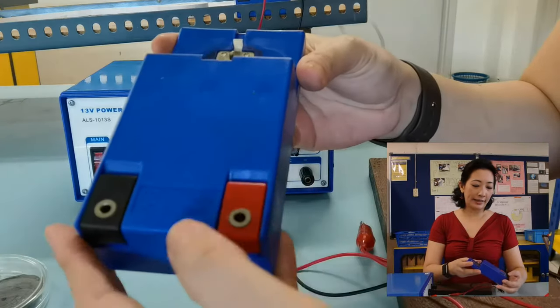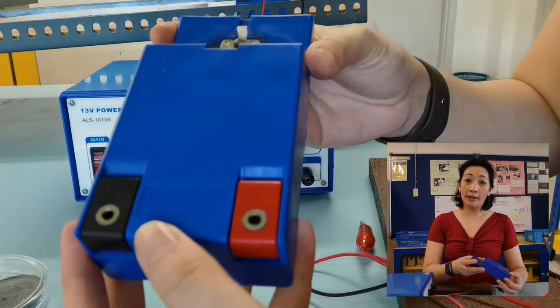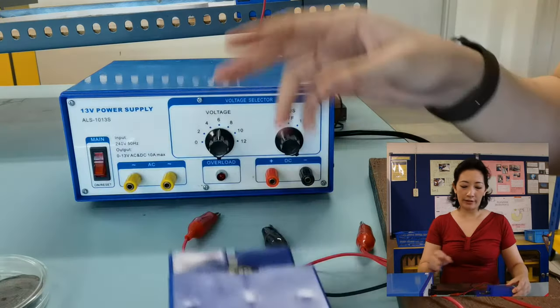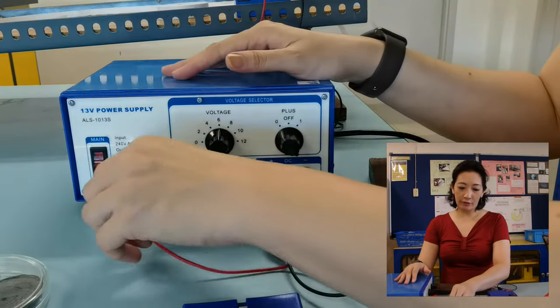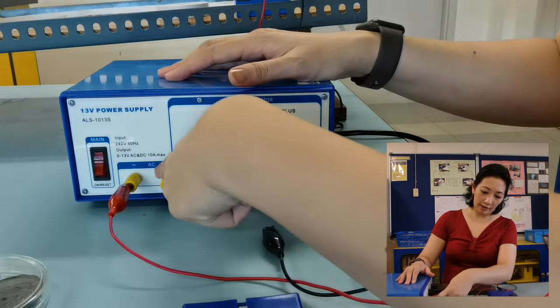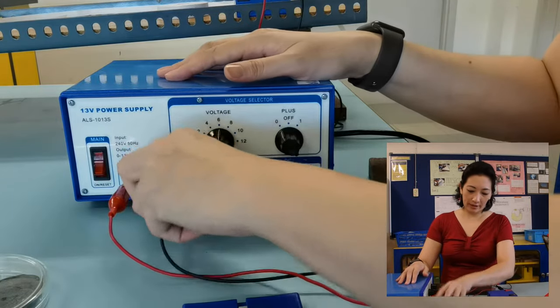As you can see, it says here AC, which is alternating current, 6V 50Hz. So we're going to make sure we have to connect this to the alternating current and 6V.